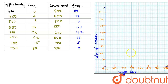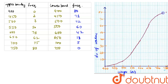At 550 we are at 20, at 600 we are at 38, at 650 we are at 62, at 700 we are at 75, and at 750 we are at 80. Now let us join all these points using a free-hand curve — we are not supposed to join them using straight lines. This is our upper bound ogive curve.